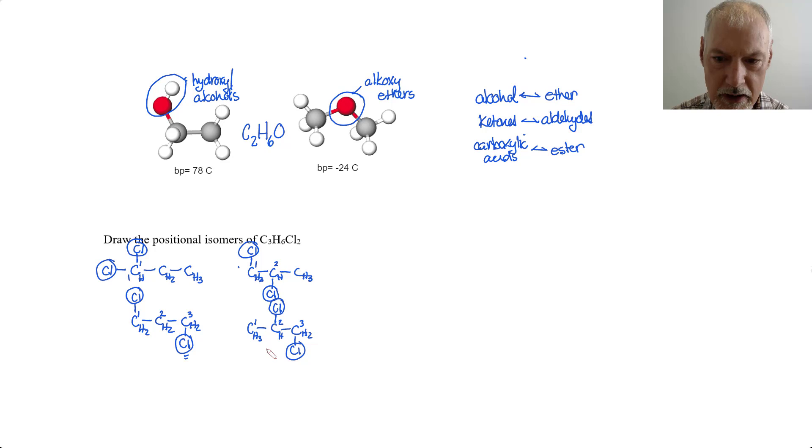But, if we numbered our chain from the other direction, we would see that it is really a 1-2 combination, because we always prefer lowest numbers. So, this is actually exactly the same chemical as the one above, but just flipped. So, that would not be an isomer.